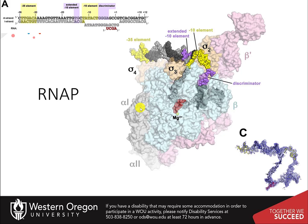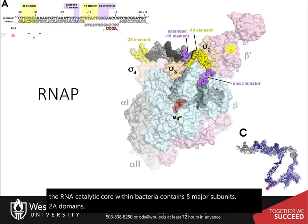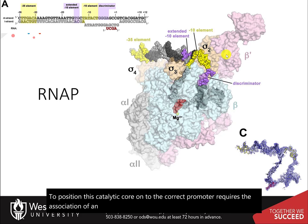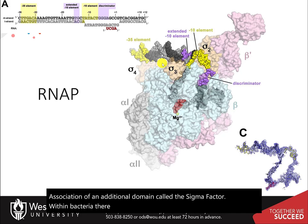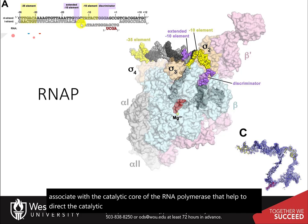The RNA catalytic core within bacteria contains five major subunits: two alpha domains, two beta domains, and one omega domain. To position this catalytic core onto the correct promoter requires the association of an additional domain called the sigma factor. Within bacteria, there are multiple different sigma factors that can associate with the catalytic core of RNA polymerase to help direct it to the correct DNA locations.